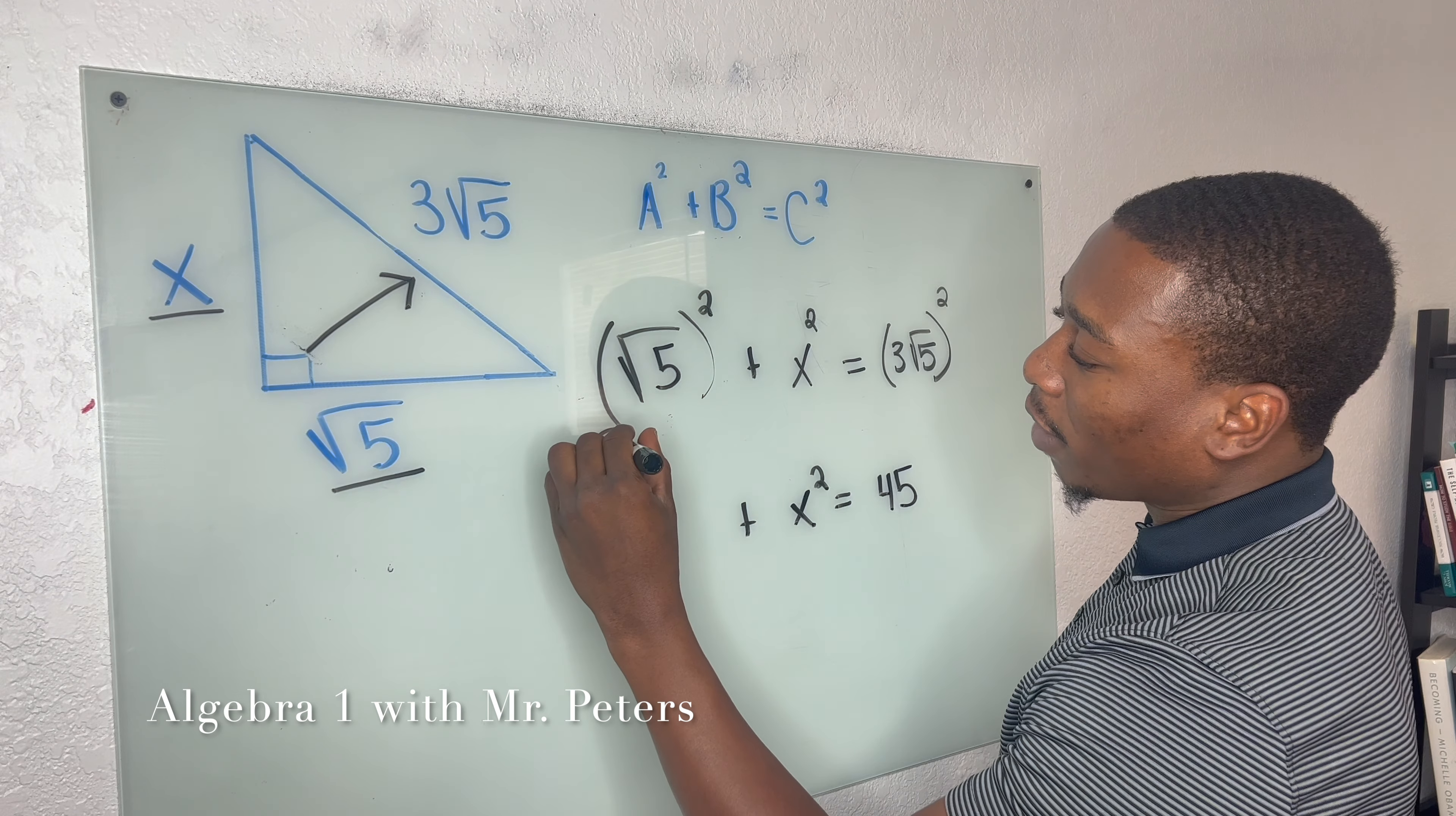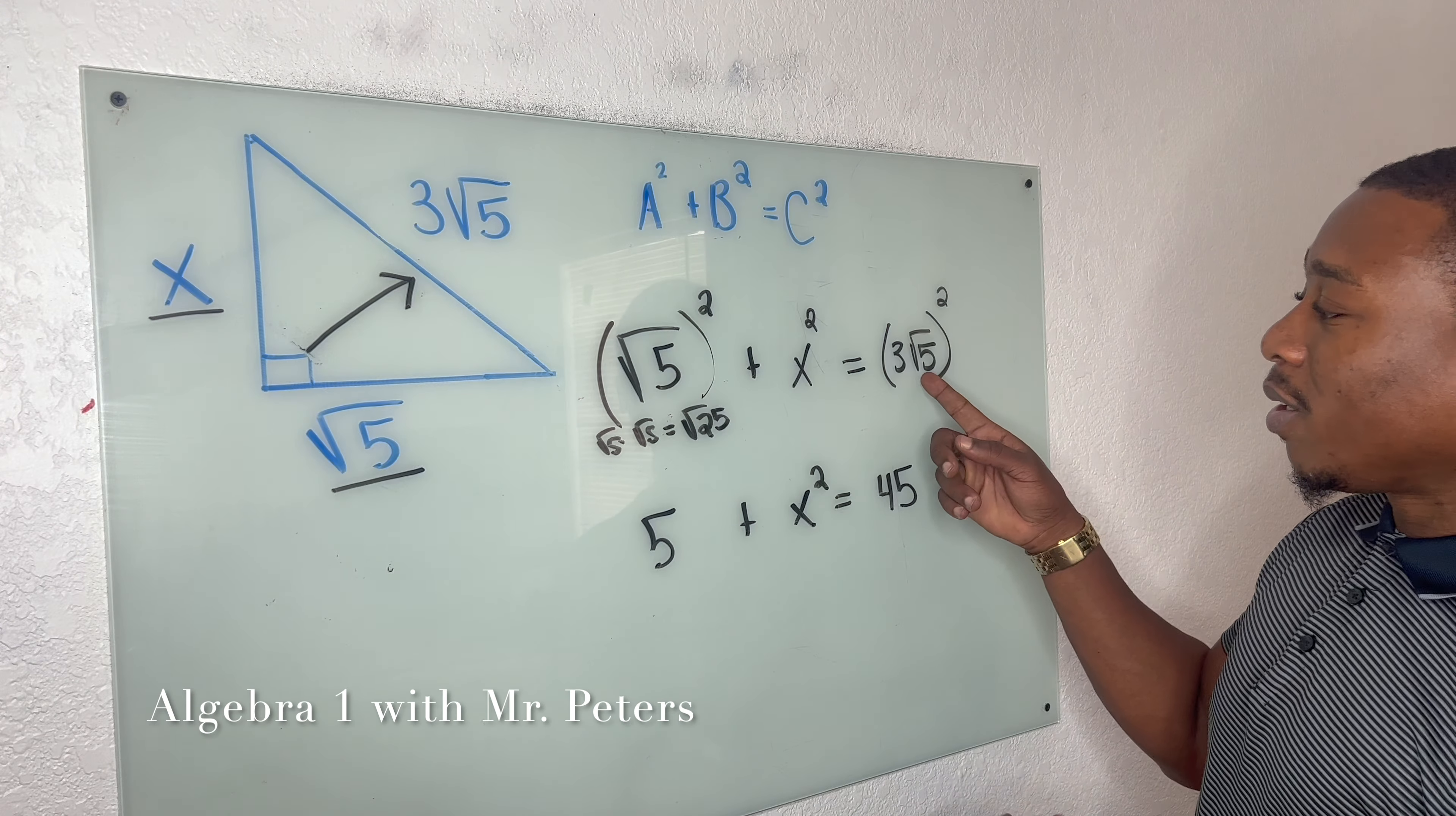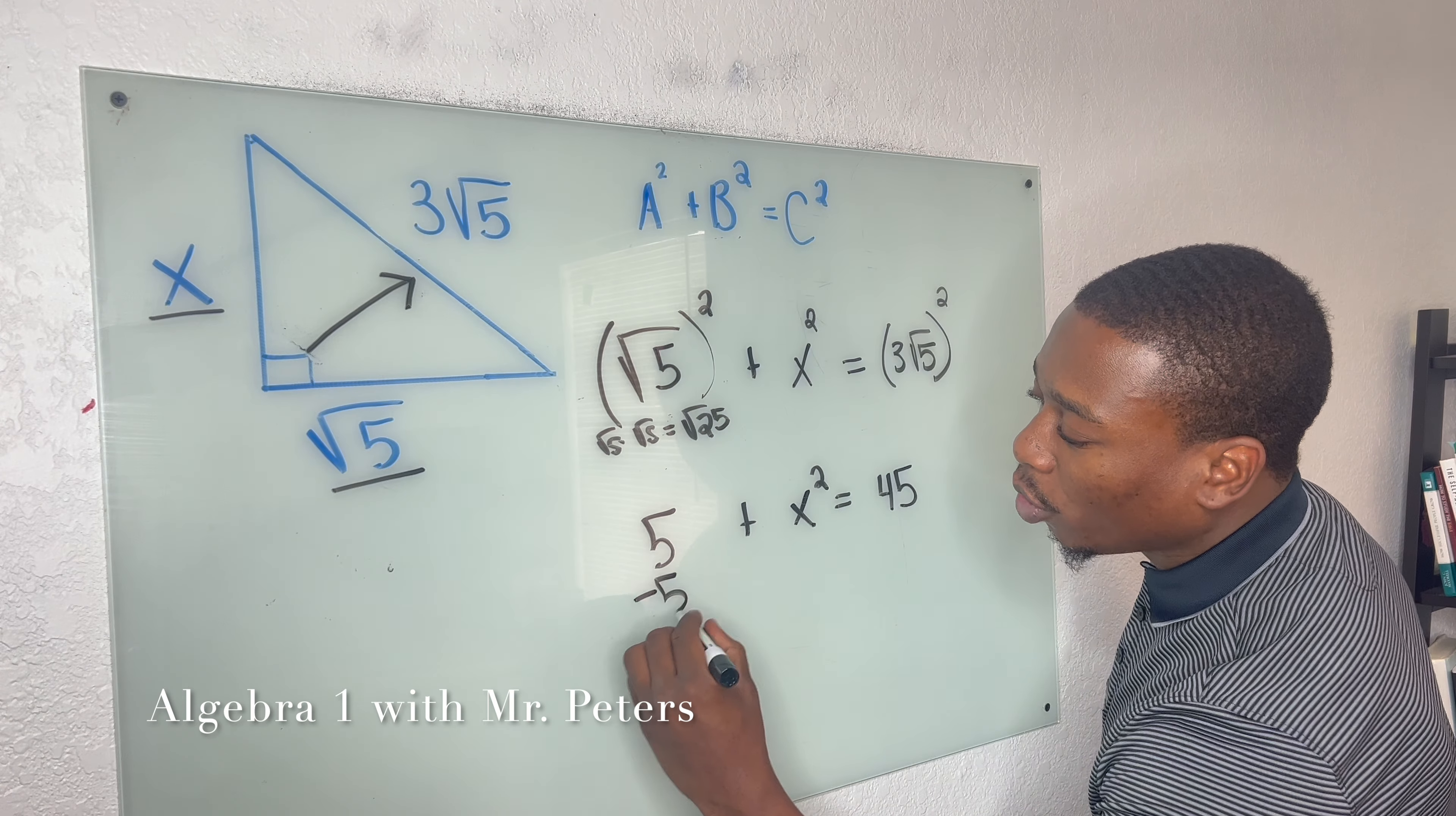We look at radical 5 times radical 5, that's going to give us radical 25, which is a perfect square, which is 5. Same thing here. This turns out to be 5 times 3 squared. 3 squared is just 9.